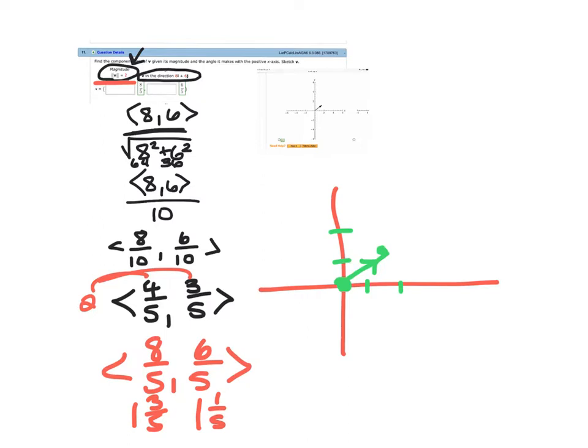A little bit trickier because the words are different, but the process is the same. If you want to find a vector in the direction of something, that's when you're doing whatever the component form is over the magnitude, then simplify it. If it says unit, you don't change it; but if it gives you a magnitude, then you're going to change it to be whatever length it is.